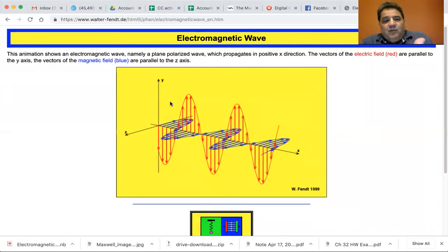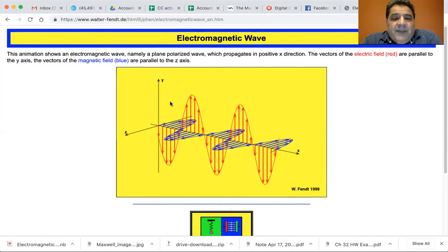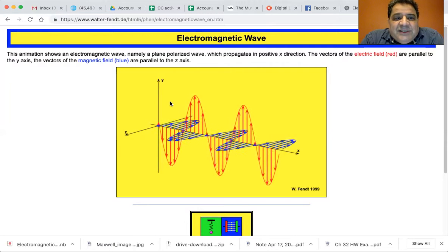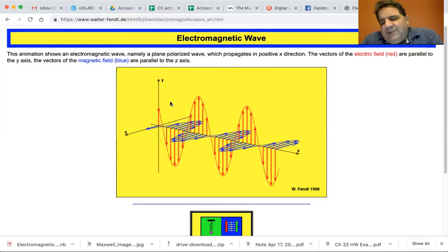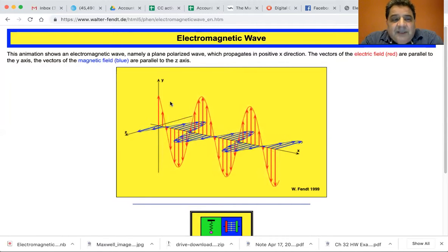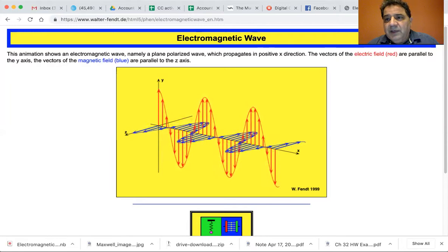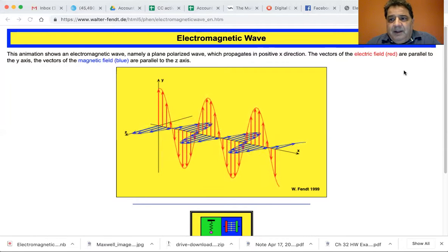And when it's positive Y, the magnetic field is minus Z. I'm sorry, in the plus Z direction. I can even read you what it says.